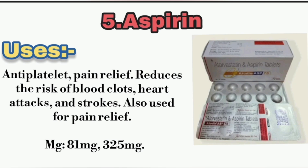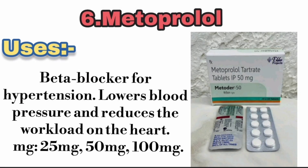5. Aspirin — Use: Anti-platelet, pain relief. Reduces the risk of blood clots, heart attacks, and strokes. Also used for pain relief. Available mg: 81 mg, 325 mg.